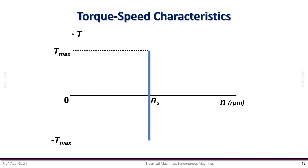As the speed remains constant in a synchronous machine, the speed-torque characteristic is a straight line parallel to the torque axis. As long as the machine torque is below the pull-out torque, the speed will remain unchanged.